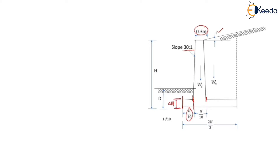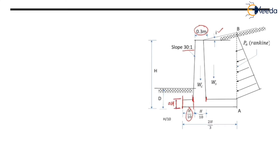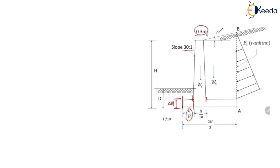As per Rankine's theory, the active earth pressure acts along the vertical line AB, which passes through heel point A. For this, a condition should be satisfied: the line AC, shown as a dotted line, should not be obstructed by the stem of the retaining wall.